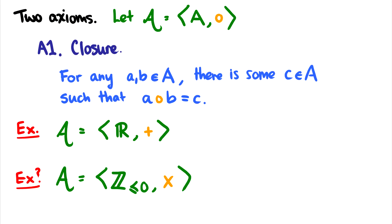Algebras have to satisfy two axioms, which are essentially requirements to be an algebra — we don't need to prove these properties, they're just requirements. I'll say the algebra A consists of a set A and an operation I'll call circle. This is a general operator — we don't know what it is. It could be addition, multiplication, union for sets, the and operation for logic — it could be anything. We're being very abstract here.